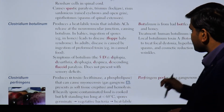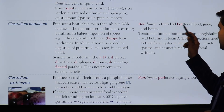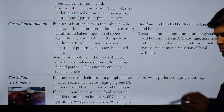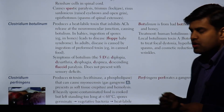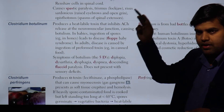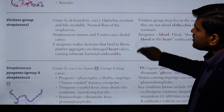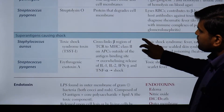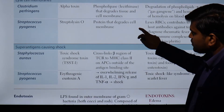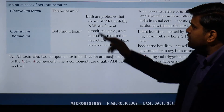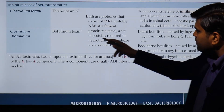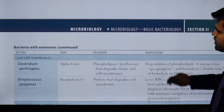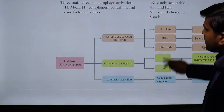Botulism can come from a bad bottle of food, juice, or honey. Treatment is human botulinum immunoglobulin. Reviewing from our exotoxin section: C. tetani and C. botulinum — C. botulinum toxin inhibits neurotransmitter release and causes infant botulism and foodborne botulism. These are toxin-mediated diseases.